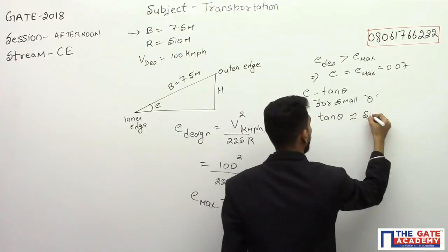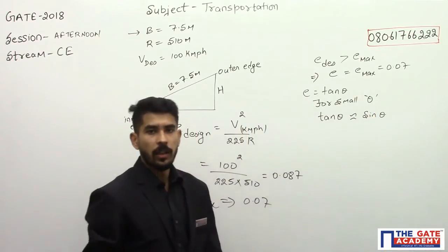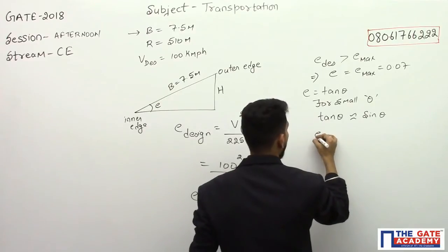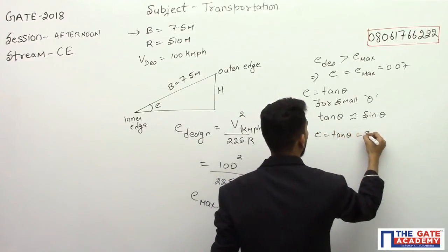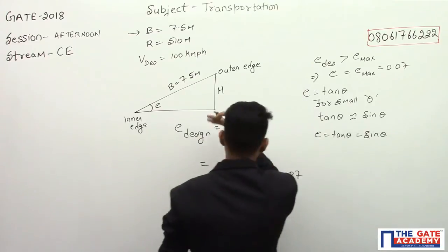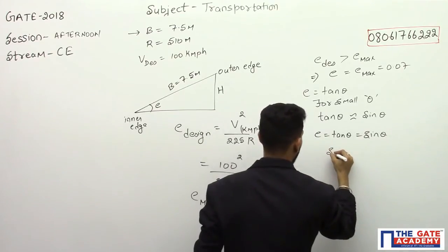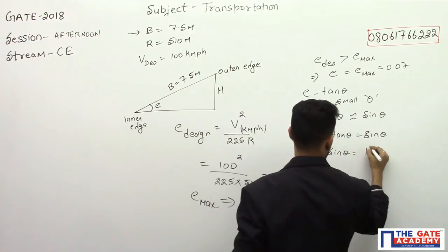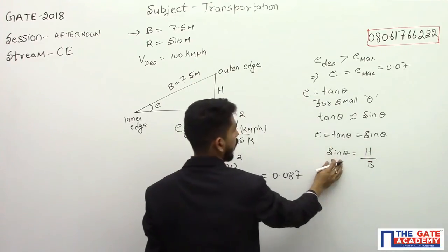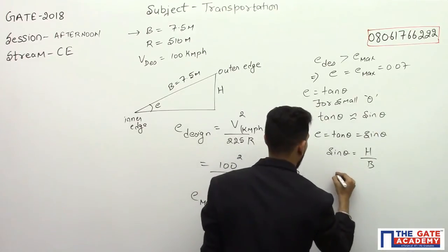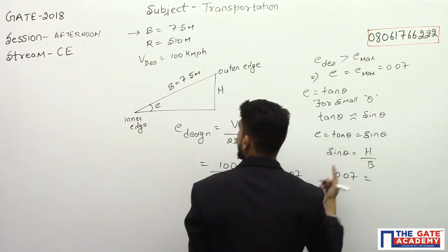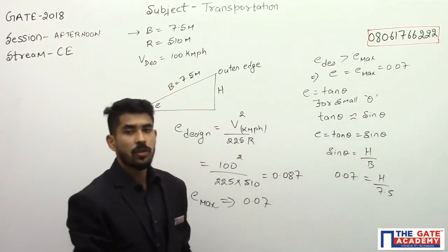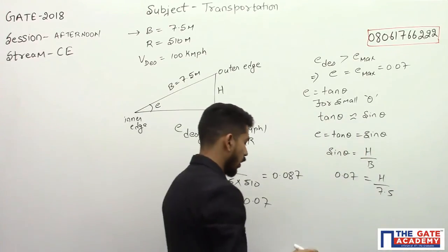Here we can write as e equal to tan θ equal to sin θ. If you apply in this particular triangle, sin θ will be equal to h divided by B. This value sin θ is nothing but e, 0.07, equal to h divided by 7.5. So the h value comes out to be 0.525 meters.